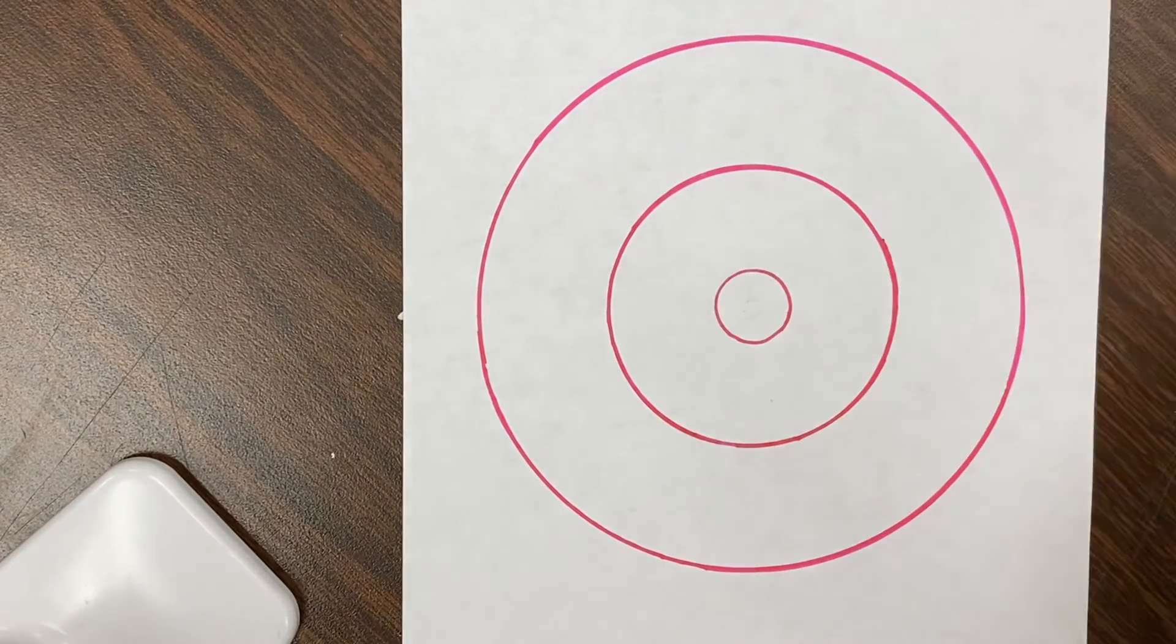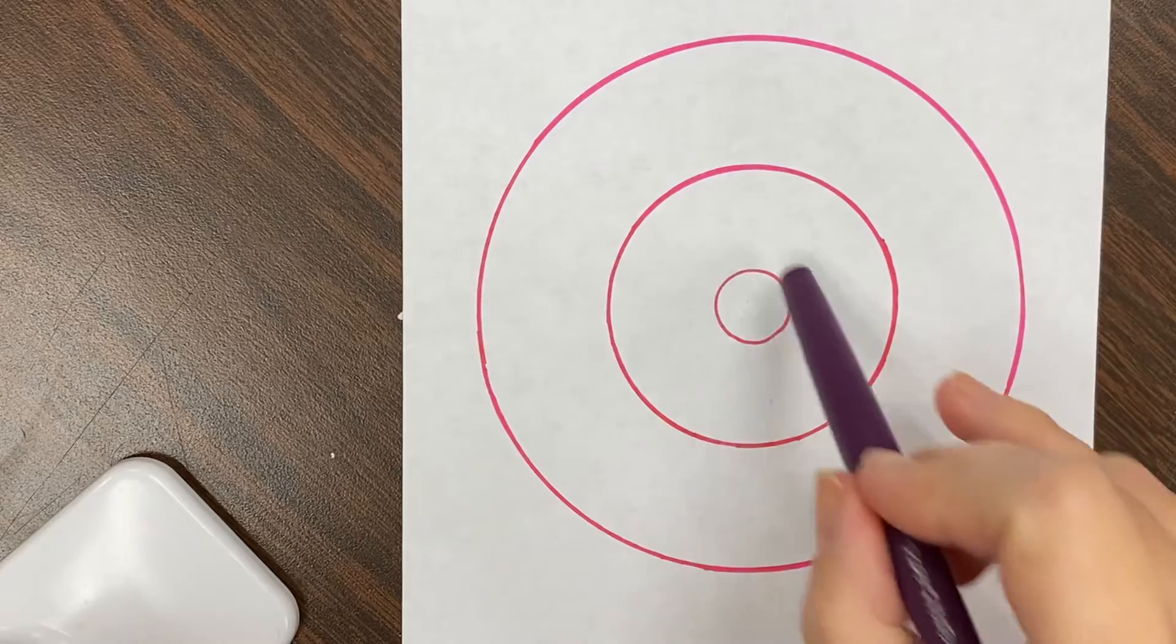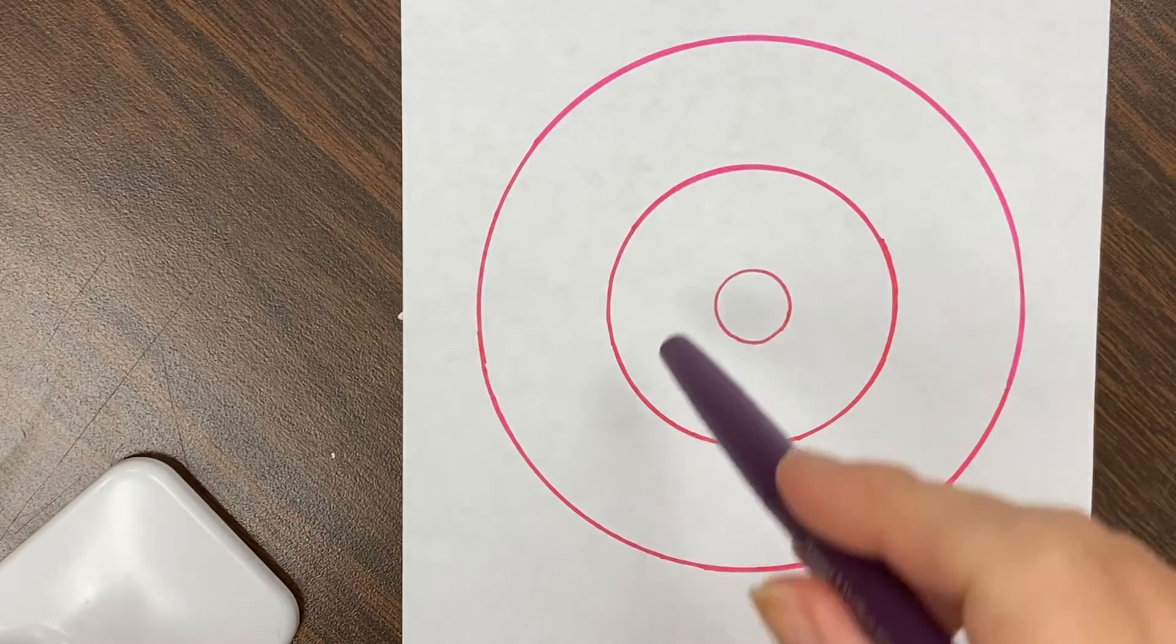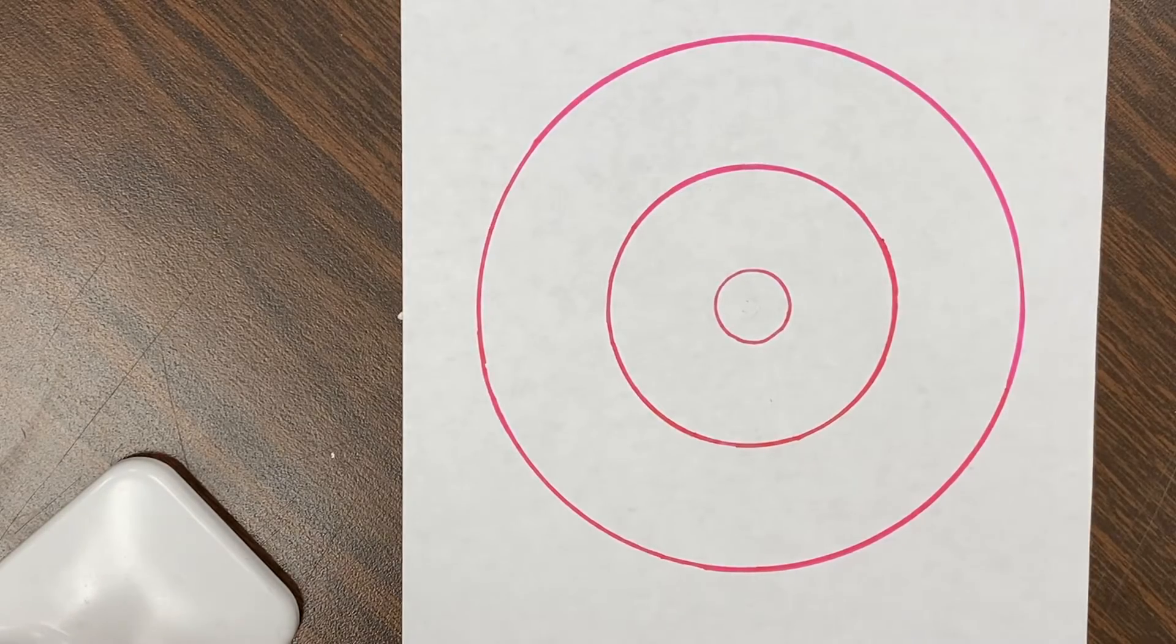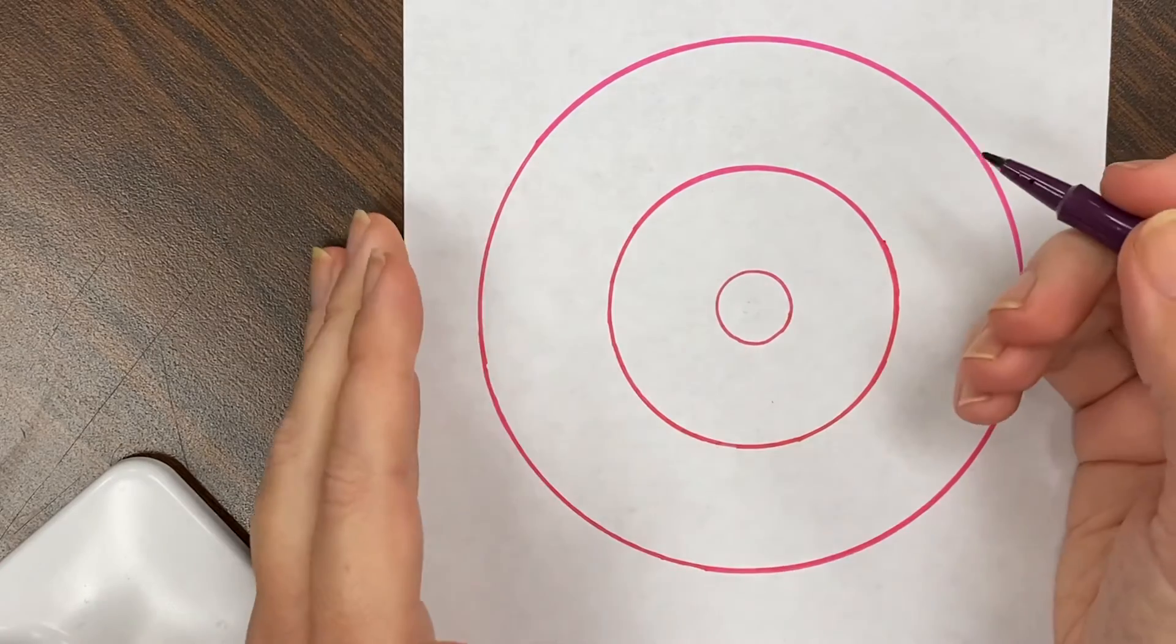This is a video about making dots on the inner circle so that we have them evenly spaced. This is an eyeballing technique.